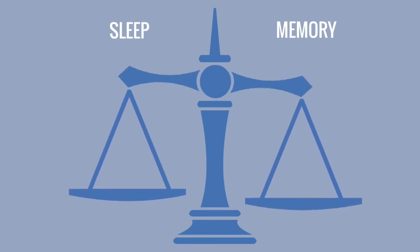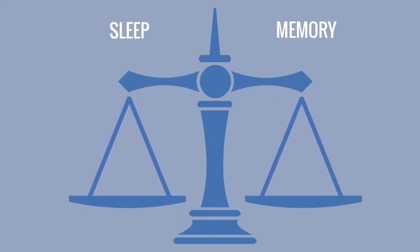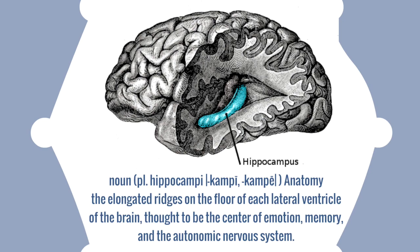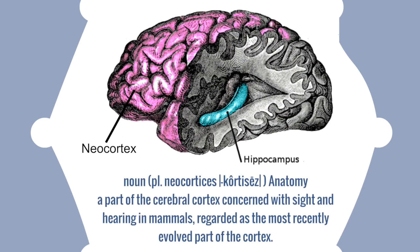Although scientists are unsure on how sleep affects and enhances memory, it seems to be involved with the hippocampus, which is the center of emotion and memory, as well as the neocortex, which is concerned with sight and hearing.